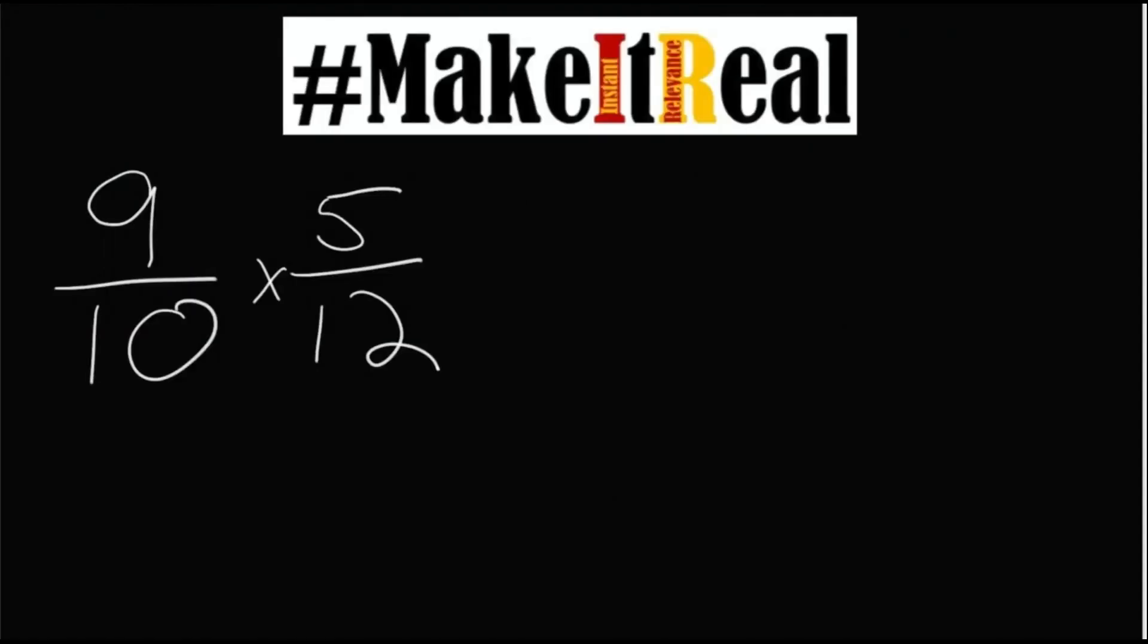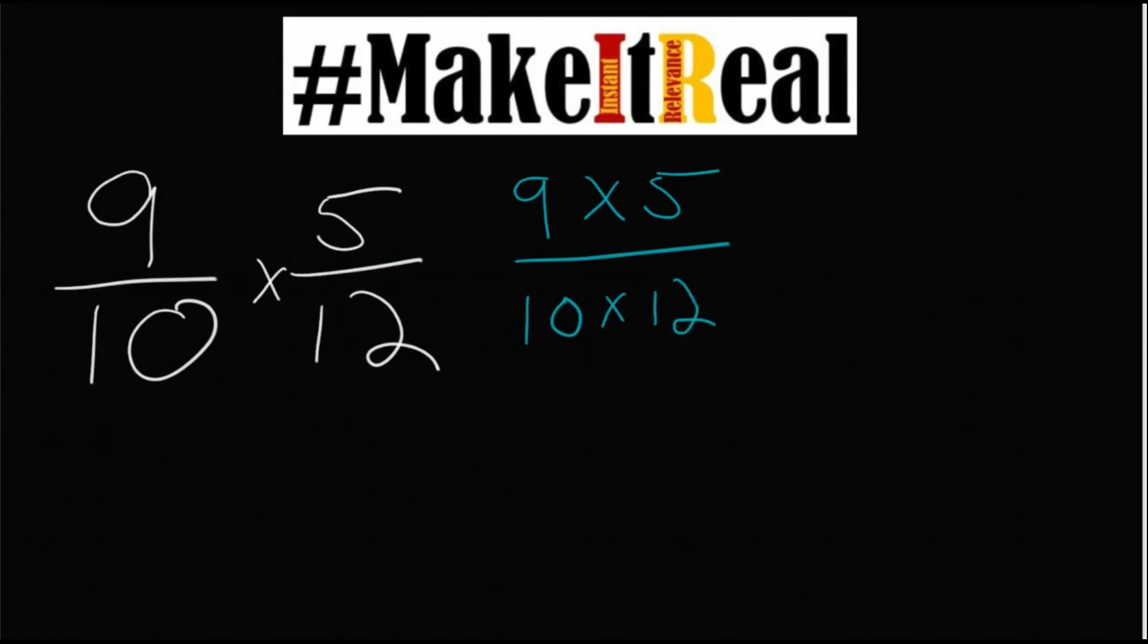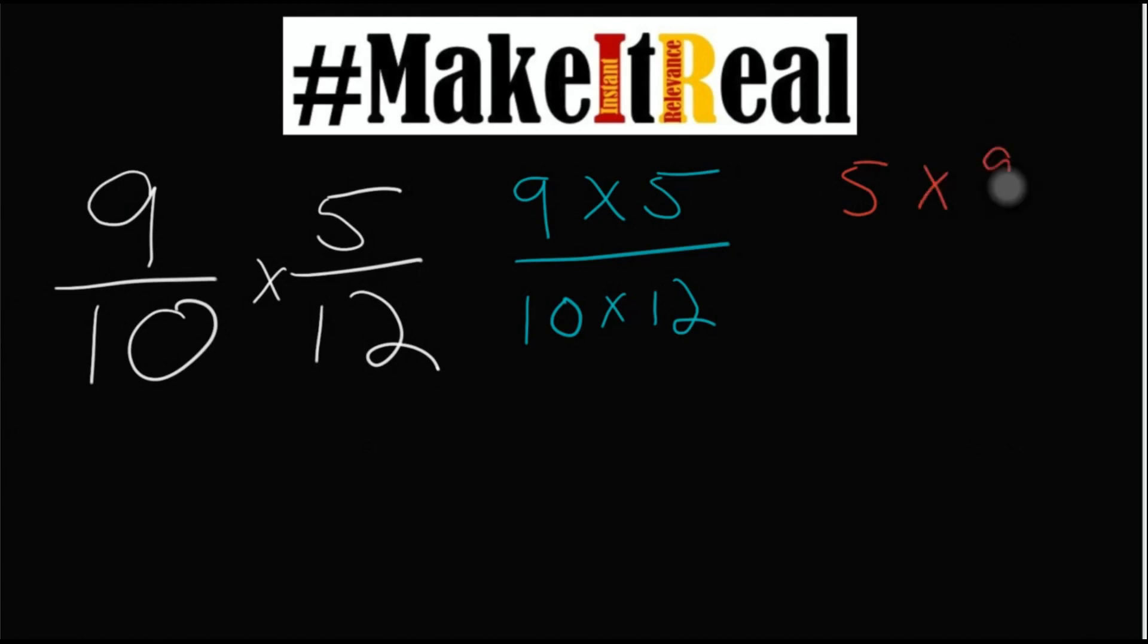Try that again. We can look at this as writing the numerator together 9 times 5 and the denominator 10 times 12 and potentially looking at that as a way of reorganizing it. Can I rearrange this in some way? Yeah I sure can. Let's reorganize the numerator this time.